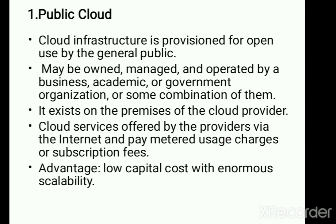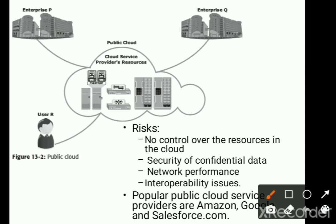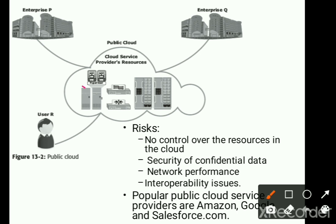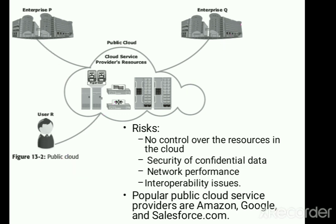In this diagram, you can see the cloud service provider resources acting as the public cloud, being accessed by enterprise P, enterprise Q, and also individual users. They are provided resources as they need them and only pay the fees for usage. For example, Amazon Prime — whatever channels or services you use, you get a subscription and pay fees for that.